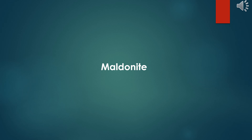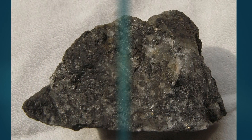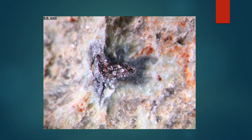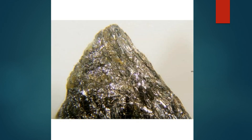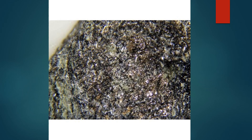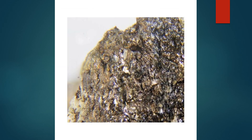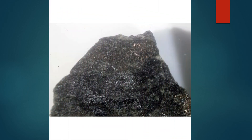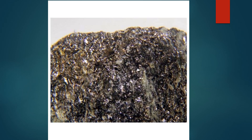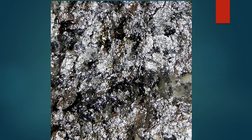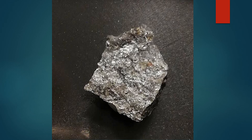Maldonite is a rare gold ore in the bismuthide mineral group, containing both gold and bismuth, with the chemical formula Au₂Bi. It is unique for its combination of gold and bismuth, and is typically found in gold mines associated with other bismuth-bearing minerals. Colour: maldonite has a pale yellow or bright metallic gold colour, sometimes with a slight greyish tint and a characteristic metallic lustre. Hardness: it has a hardness of 3 to 3.5 on the Mohs scale, making it relatively soft. Crystal system: maldonite belongs to the tetragonal crystal system, and often appears as small grains or masses.